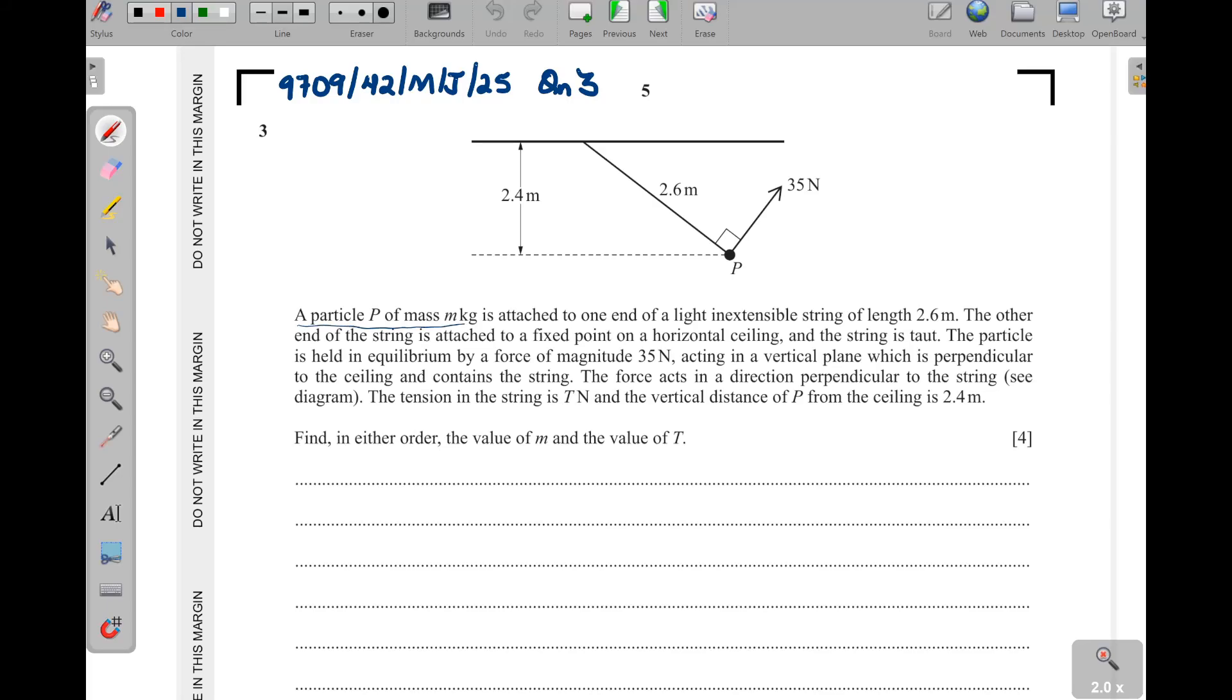Question 3. A particle P of mass m kilograms is attached to one end of a light inextensible string of length 2.6 meters. The other end of the string is attached to a fixed point on a horizontal ceiling, and the string is taut.